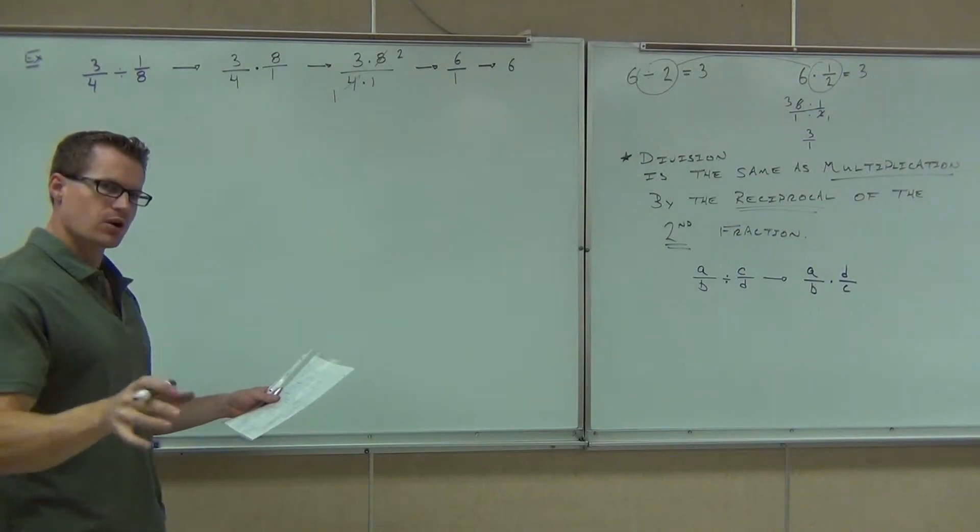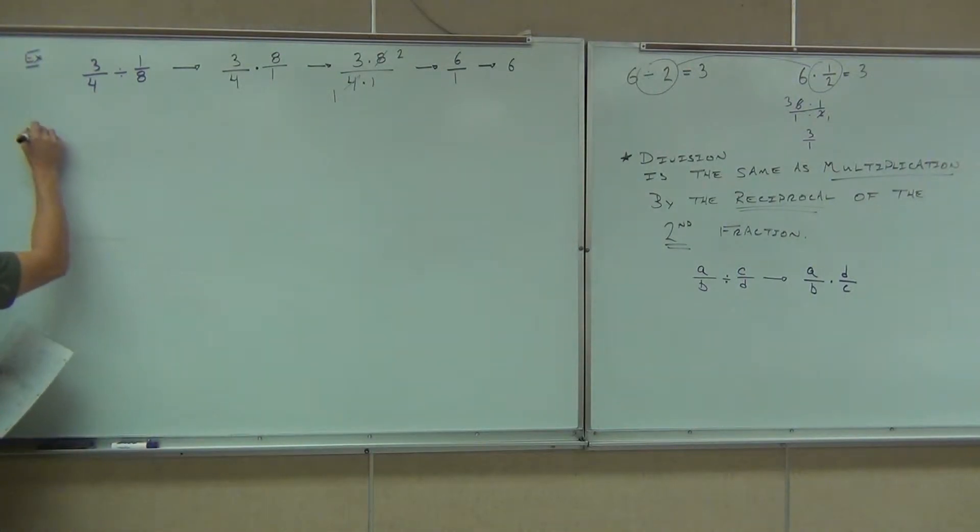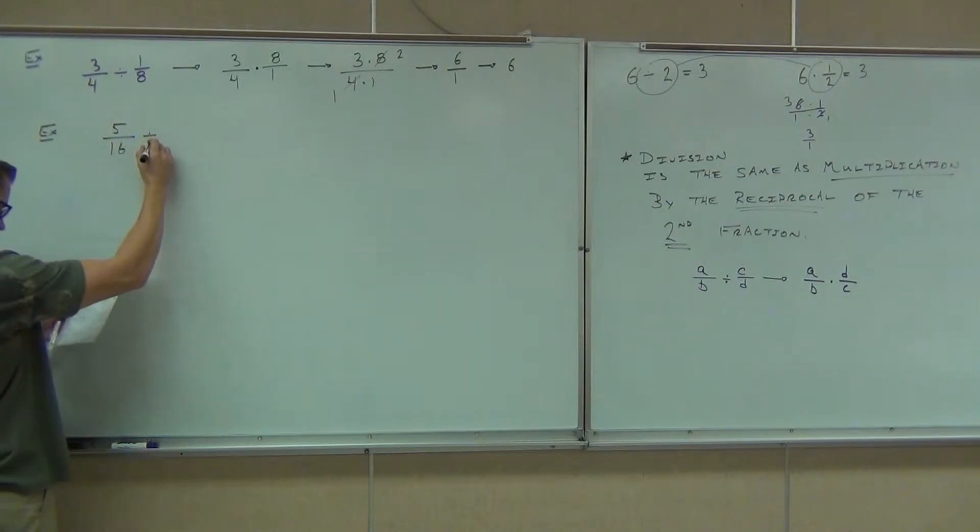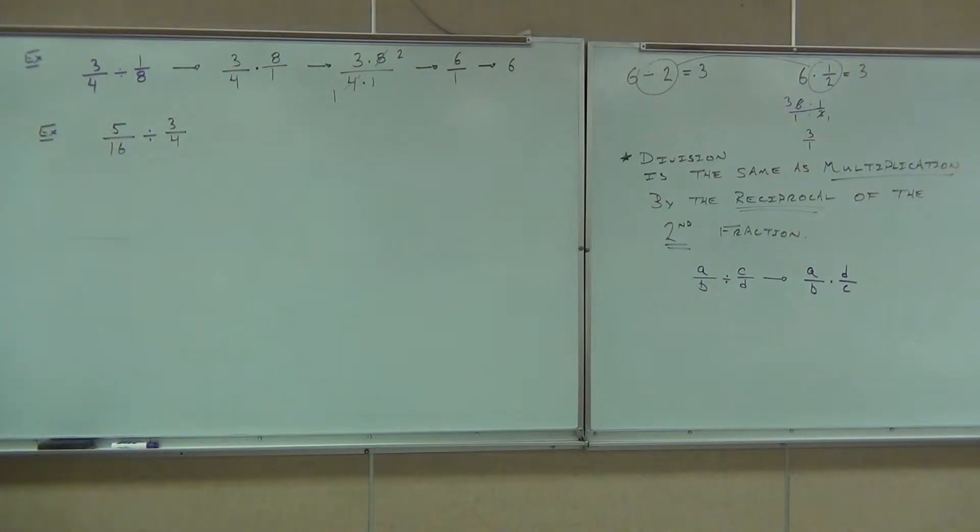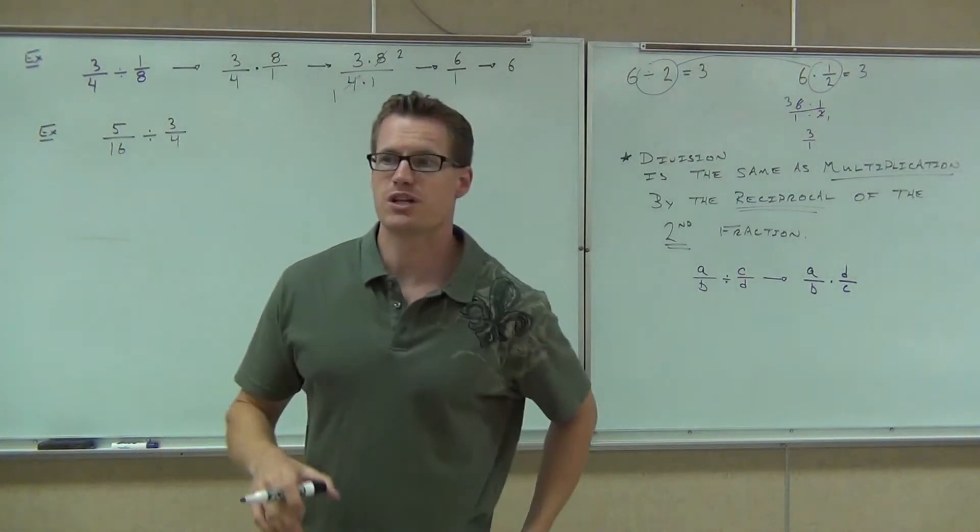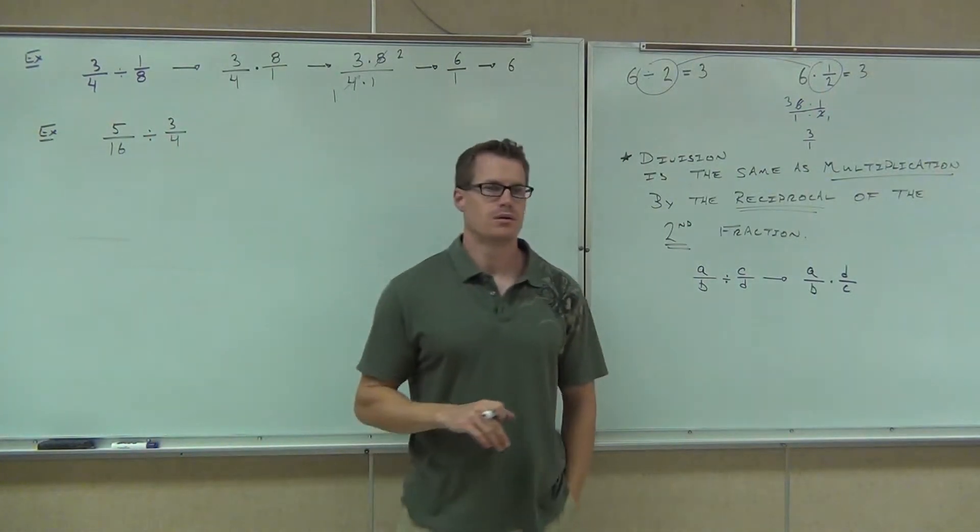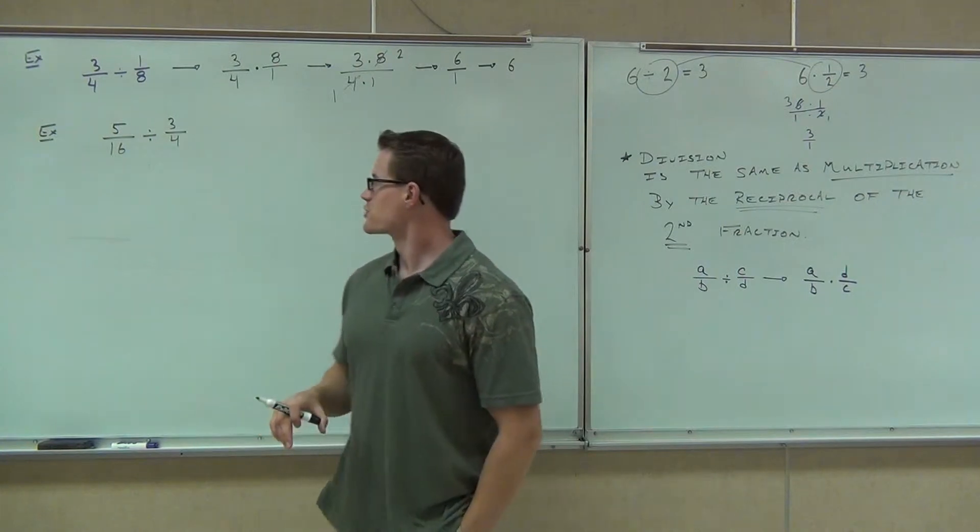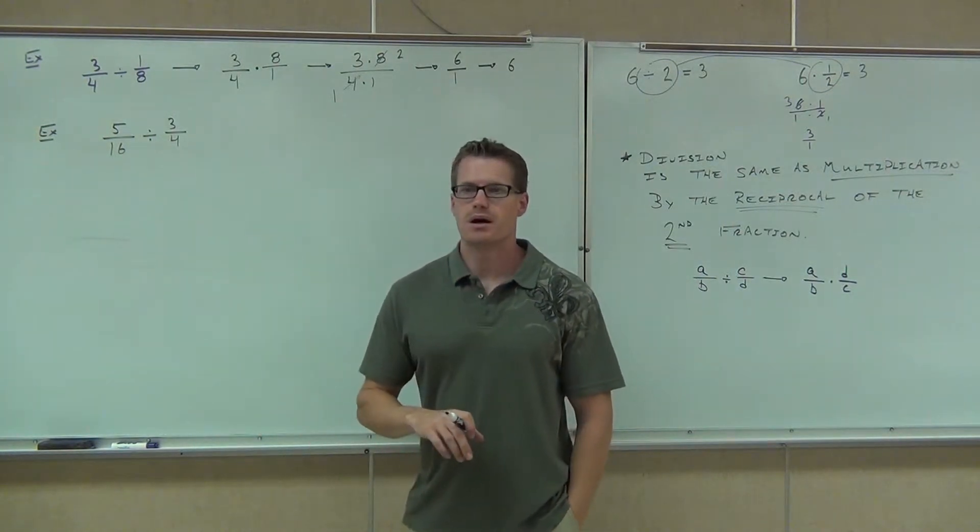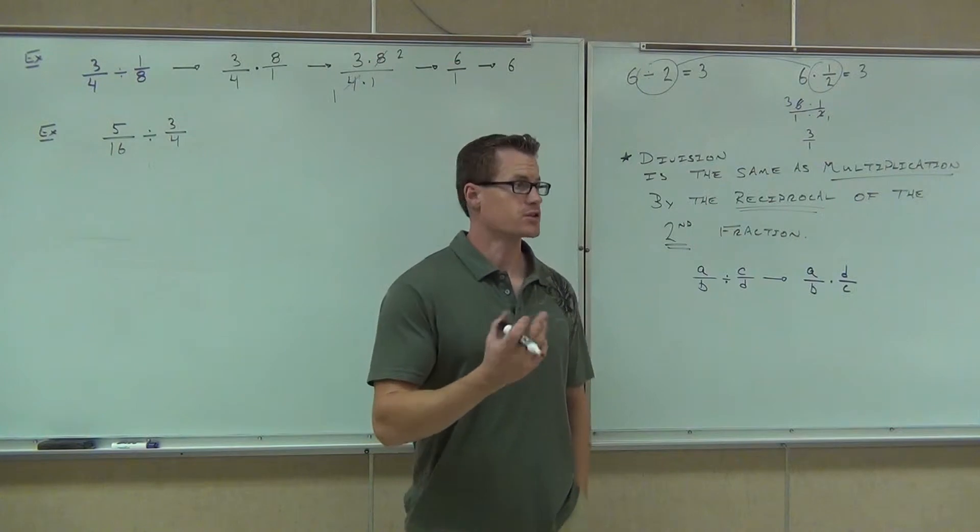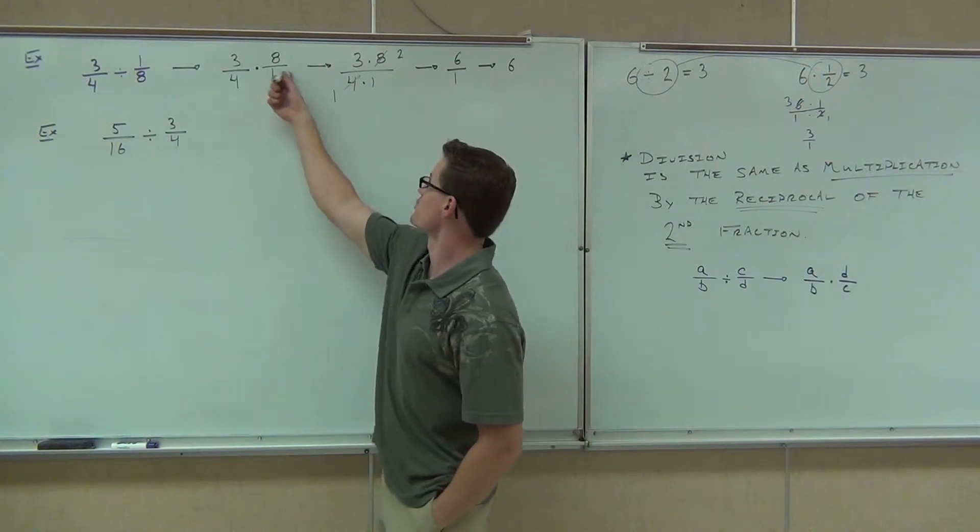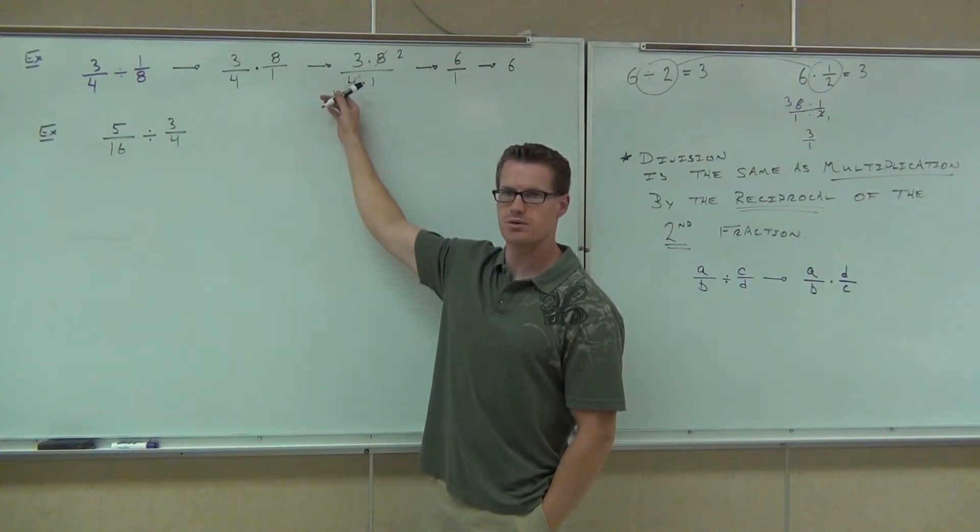Let's try one more together. I'll give you a couple on your own, and we'll move on. Okay, five-sixteenths divided by three-fourths. Why don't you tell me the first thing I'm going to do? Okay, it's multiplication. Good. Now, there's one thing I do want to show you here. The reason why, one of the reasons among the several, that I have you write things as one fraction before you simplify. Take a look at this real quick, please.